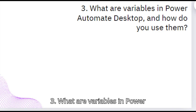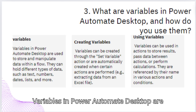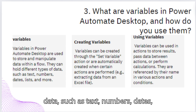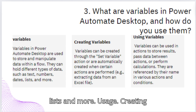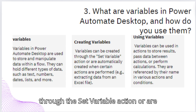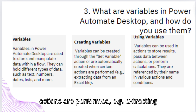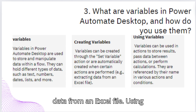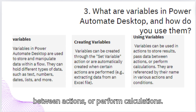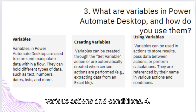Question 3: What are variables in Power Automate Desktop and how do you use them? Variables are used to store and manipulate data within a flow. They can hold different types of data such as text, numbers, dates, lists, and more. Variables can be created through the set variable action or are automatically created when certain actions are performed, e.g., extracting data from an Excel file. Variables can be used in actions to store results, pass data between actions, or perform calculations, and are referenced by their name in various actions and conditions.